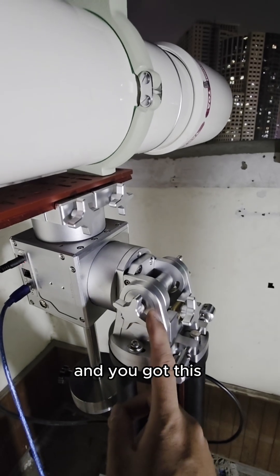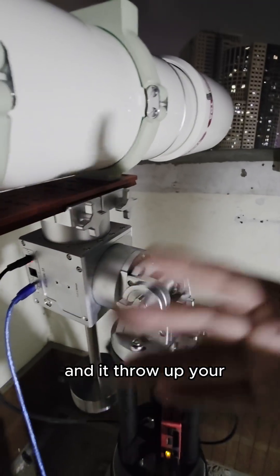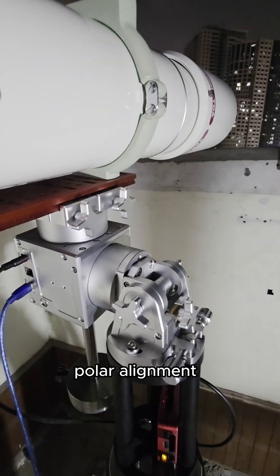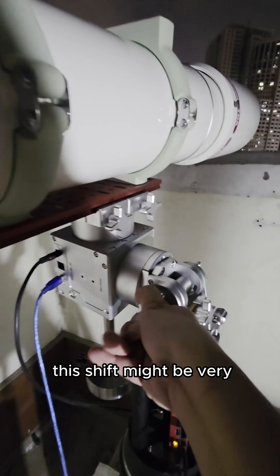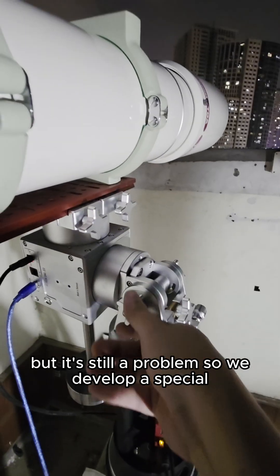and you tighten this knob, the mount will shift a little. And it throws off your carefully dialed in polar alignment. This shift might be very very slight but it's still a problem.